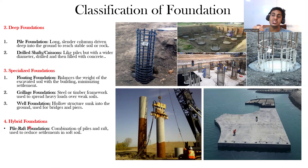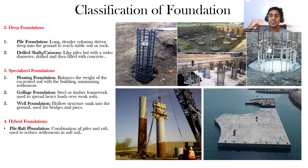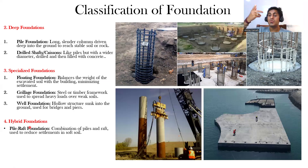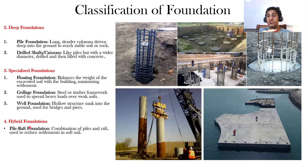For a normal residential building, isolated and combined footing is sufficient — at least up to G+5 storey buildings. If your soil is very weak, you can go with a pile foundation. If you're constructing a high-rise — 10 floor, 15 floor — you can go with a raft foundation. For a huge structure you can go with pile and raft combination. It all depends on what kind of building you're constructing and the quality of your soil — the SBC of your soil.